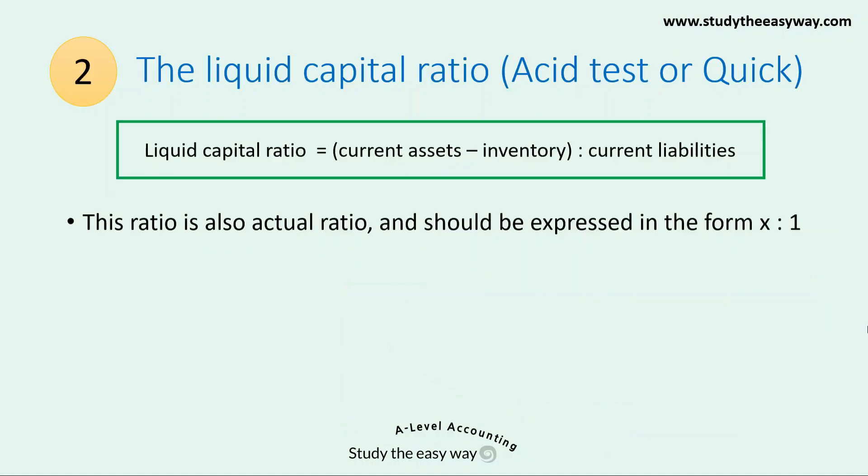Let's move on now and talk about the liquid capital ratio, which is similar in many respects to the ratio we've just looked at. The liquid capital ratio compares current assets excluding inventory to the current liabilities, because inventory is considered to be slow to convert into money. This is also a ratio and should be expressed in the form X to 1.